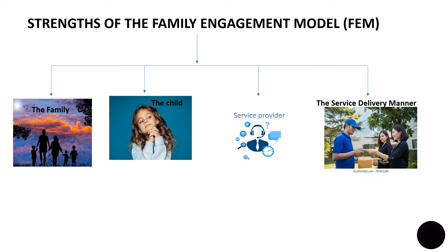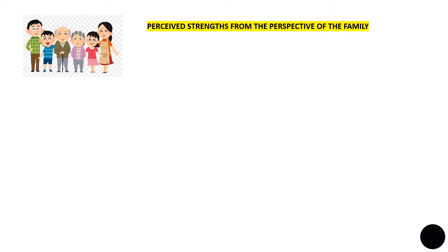So here I will show you how the perceived strengths of the family engagement model were identified by stakeholders during the data collection process. Providing the background was important so that you know where the research is coming from. Now remember, here we are trying to identify the main themes through content analysis. The main theme is basically to get the perceived strength of the model. The framework developed was based upon the analysis of the information gathered, which suggested that the various themes reflected the strengths of the model that could be classified under four perspectives: the family, the child, the service providers themselves, and the service delivery manner.